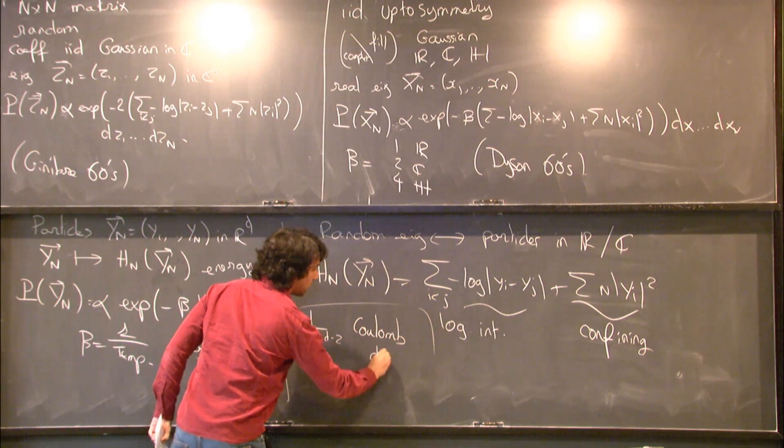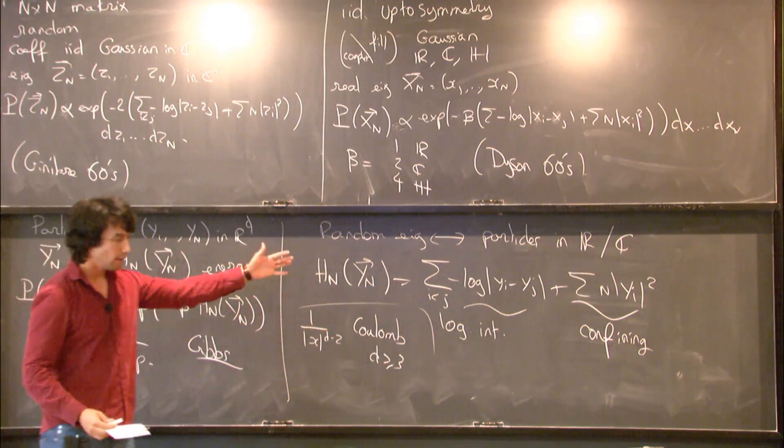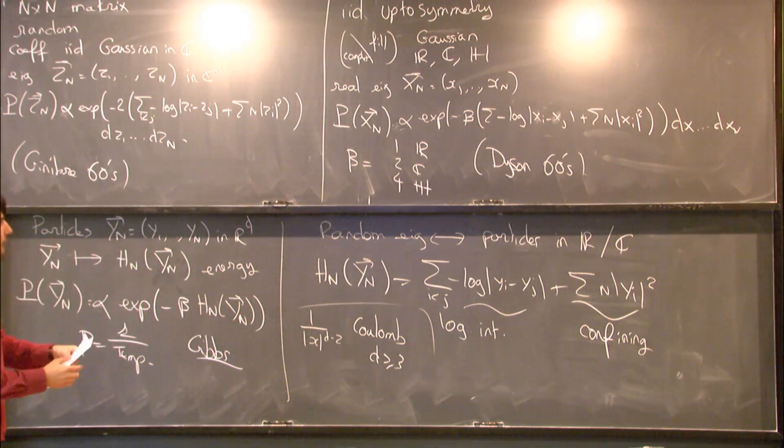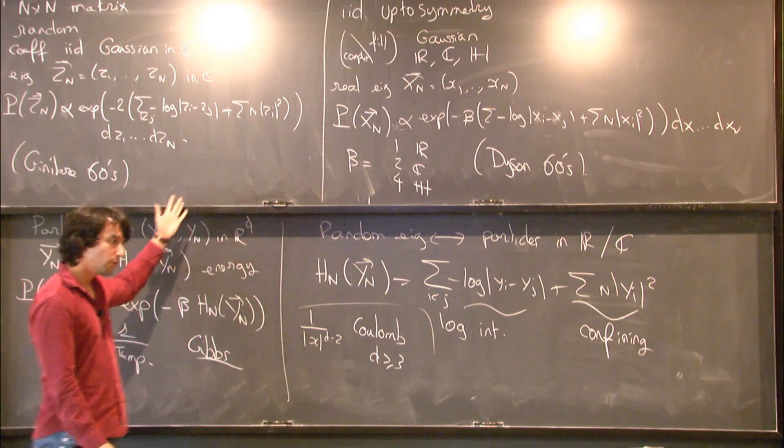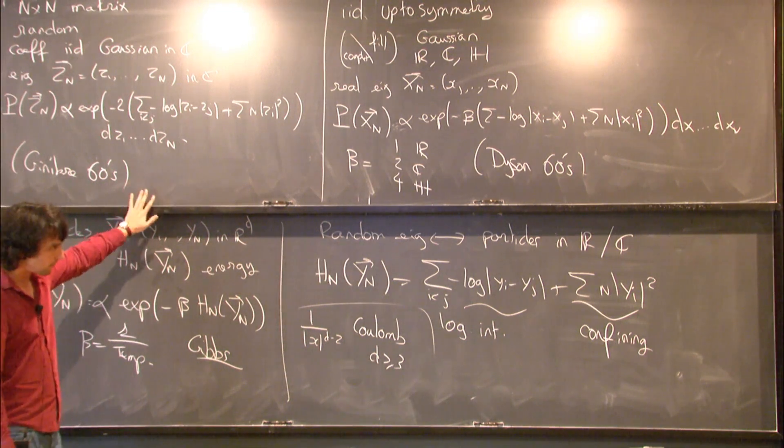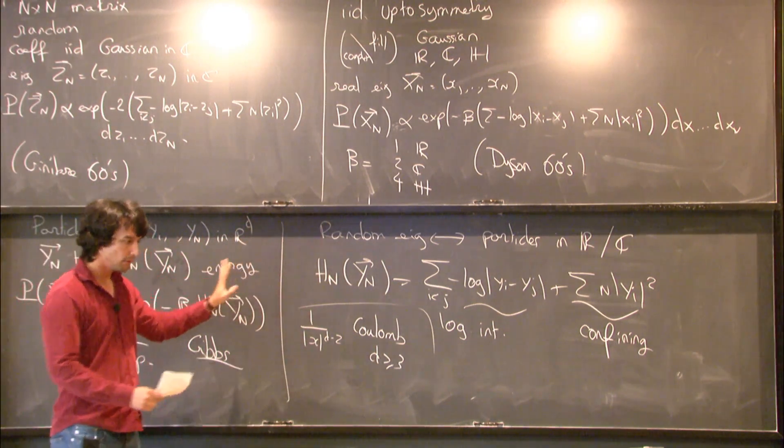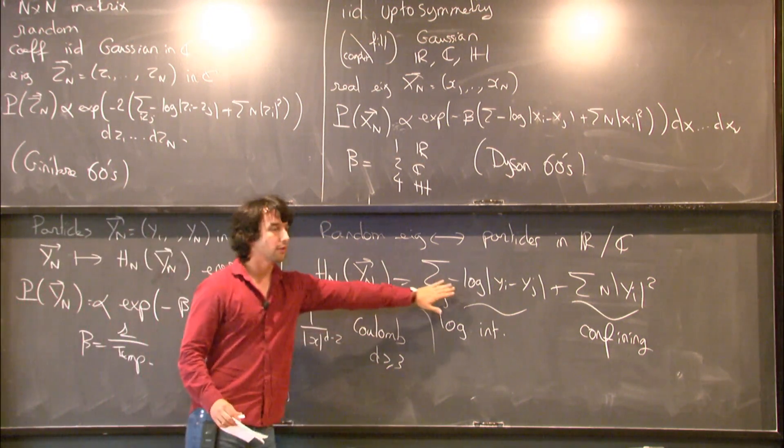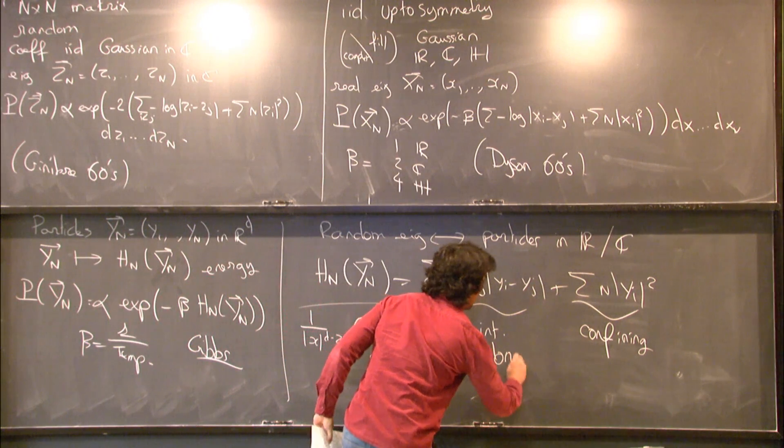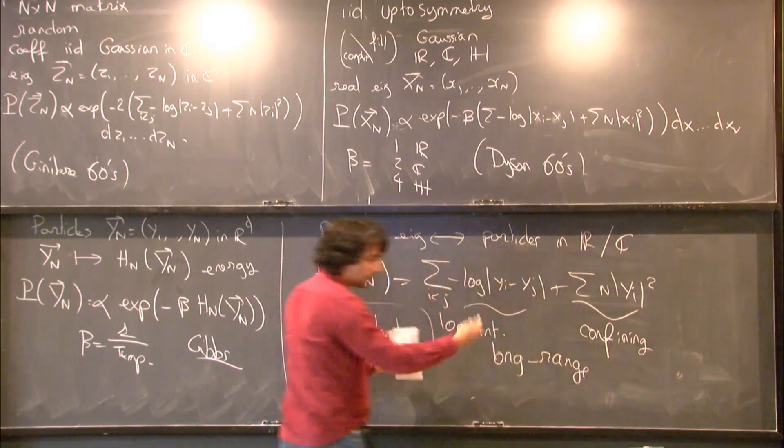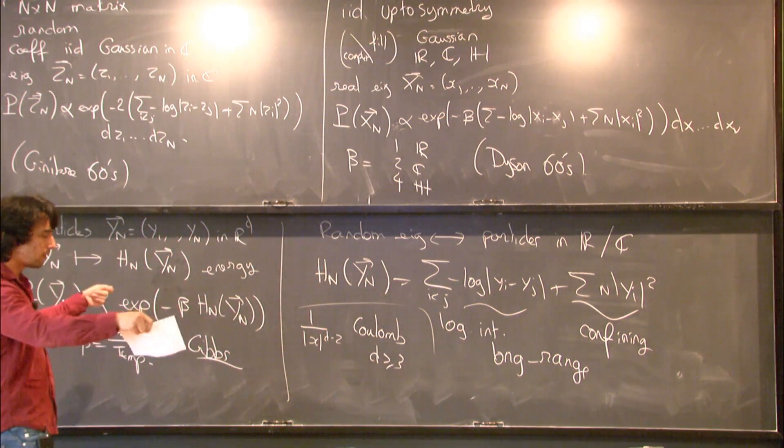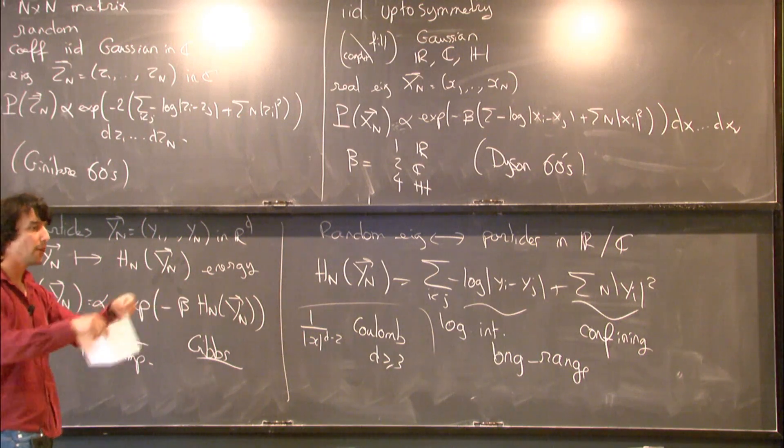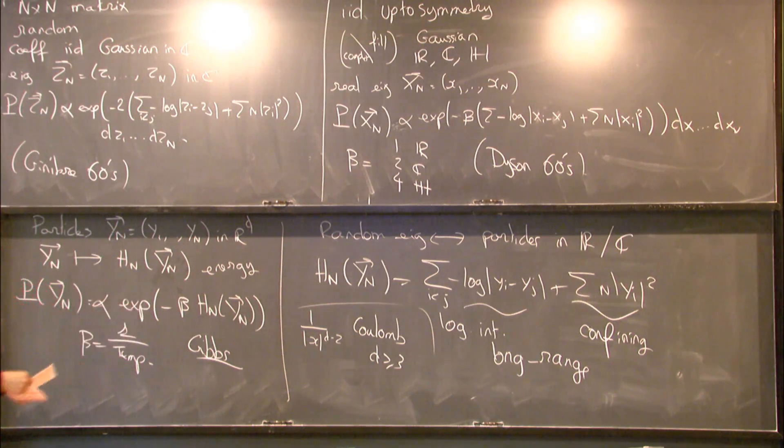So most of my interest is in studying those systems and related systems. So you can replace the logarithmic interaction by the Coulomb interaction in dimension bigger than three. Log is the Coulomb interaction in dimension two. And there are two reasons that you can study the systems. They have some connection with random matrix theory, especially in dimension one. And also in a more anecdotal way in dimension two. But they are also interesting in the statistical physics point of view. Mostly because this interaction is long range. It doesn't decay. It doesn't tend to zero at infinity, but it doesn't decay fast when particles are far away. So in a sense, every particle feels the effect of all the other particles and that creates difficulties in the analysis.